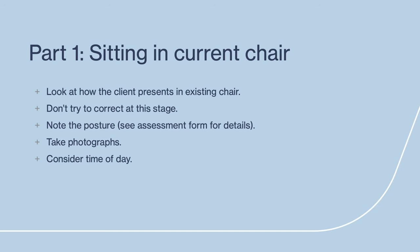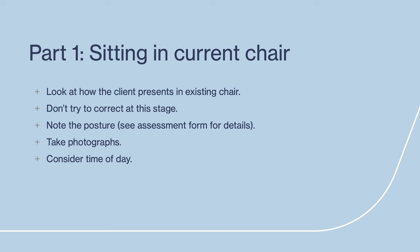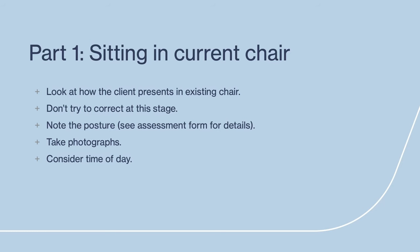Part one: sitting in their current chair. Observe the person from the front, back and sides, and take photos if you gain consent. At this stage you are not correcting anything — just observing and taking notes. Note the posture and use the prompts on the assessment form to guide you. If you need any help with assessment forms, please get in touch and we are happy to send you a version we created. Consider the time of day, as some people are more alert or tired during different periods.